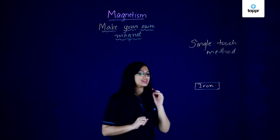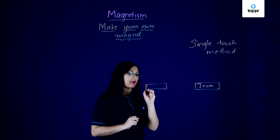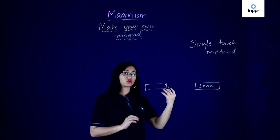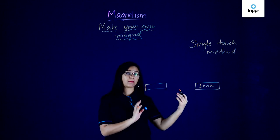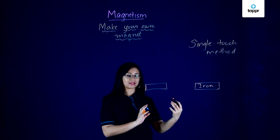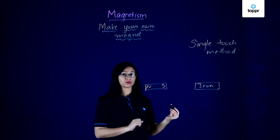All I have to do is take a permanent magnet. A permanent magnet, like we already studied, is a substance which always contains magnetic properties or is always going to retain its magnetism. It would already have a north pole and a south pole.